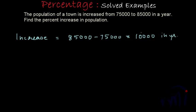And this increase is over 75,000 because 75,000 was the initial population. So when we find the percent, this will become the base for finding the percent. If I write the increase as a fraction, it will be 10,000 over 75,000.